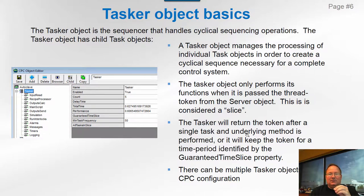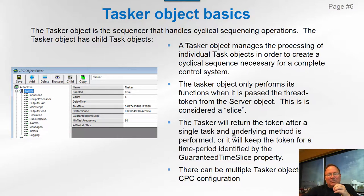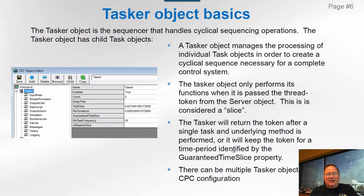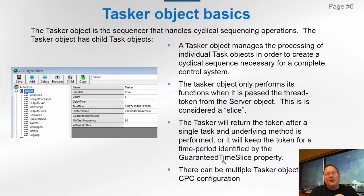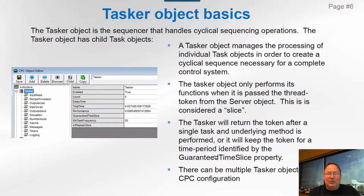The tasker will return the token after a single task is completed, or whenever one of the underlying sub-method calls is completed. You can set guaranteed time slice to increase the amount of time that the token stays with that tasker — a way of really speeding up taskers — but it will also create hangs in your client; it'll seem sluggish. Typically we don't use guaranteed time slice, but if we do, it'll be a very small number like 0.001 or two milliseconds. If you make it too big, you'll see problems with your clients.